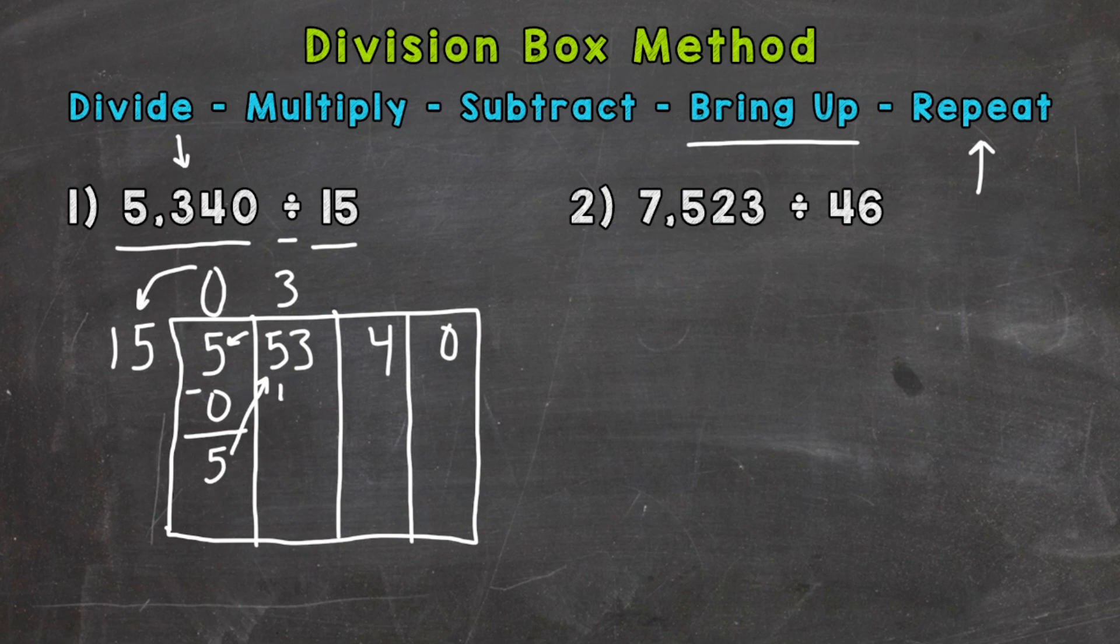So multiply. 3 times 15 is 45. And we subtract. So you can either use mental math. 53 minus 45. Or we can borrow. And we get to 13 minus 5, which is 8. And 4 minus 4 is 0. So we get 8. So now we bring the 8 up to the tens place here. And we have 84.